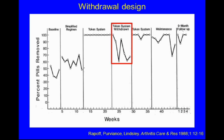This is an example of a withdrawal design using one subject from Rapoff et al., 1988. We were looking at adherence to medications in a young man who had arthritis. We started with a baseline condition, using pill counts as the measure of adherence. During the first week he was about 50% adherent, which is typical with a chronic illness. Then something unexpected happened — the physician changed his regimen from three times a day to twice a day, simplifying the regimen. We made this a condition, and as you can see, there was some increase in adherence just by simplifying the regimen.